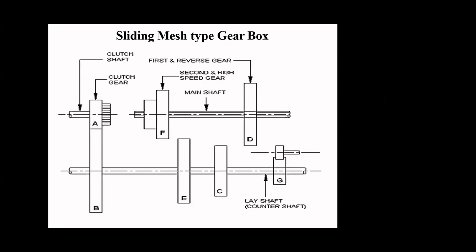In this sliding mesh type gearbox, the power comes from the engine to the clutch shaft, and then to the clutch gear, which is always in mesh with the gear on the lay shaft. All the gears on the lay shaft are fixed to it, and as such they are all rotating all the time when the engine is running and the clutch is engaged.